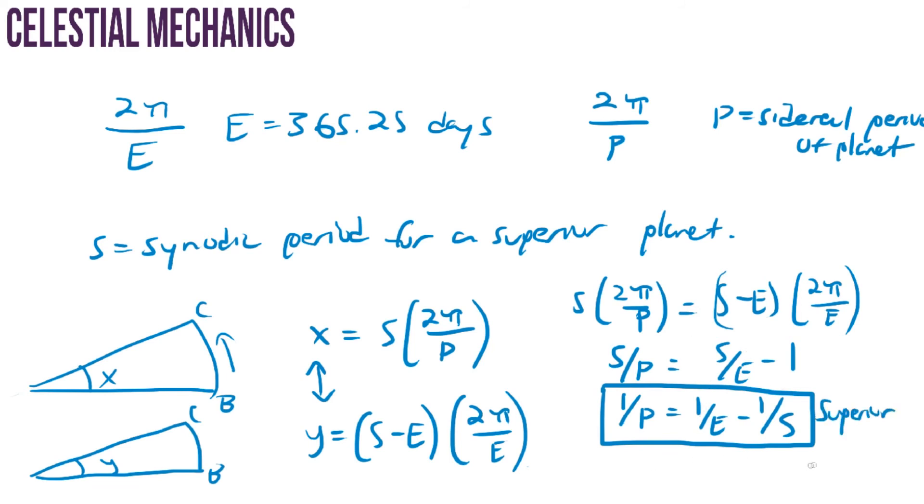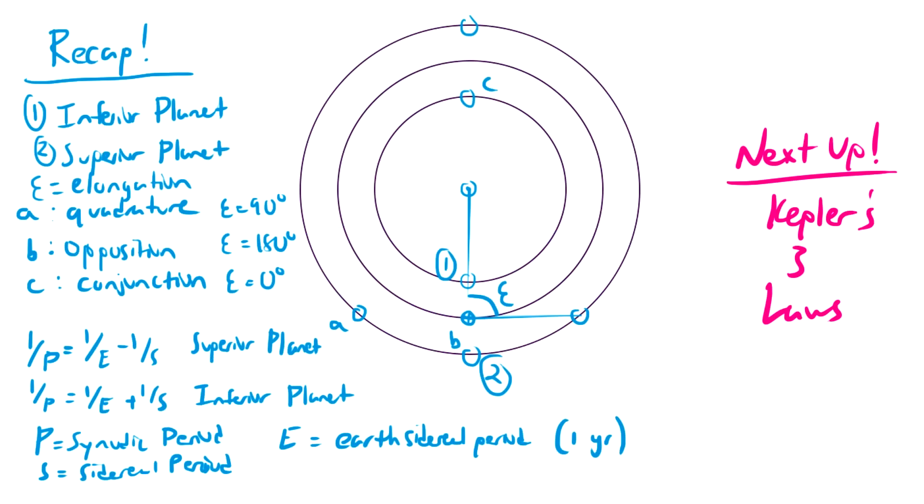For an inferior planet, the only difference is that these two values here are added together, not subtracted. Please join me in the next video, where I discuss Kepler's three laws of planetary motion. I hope to see you there.